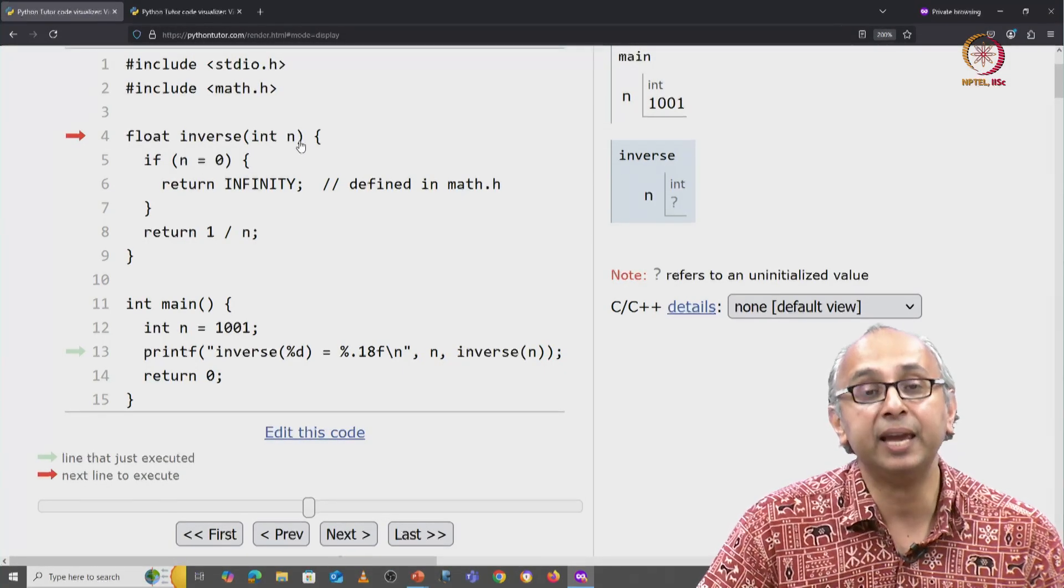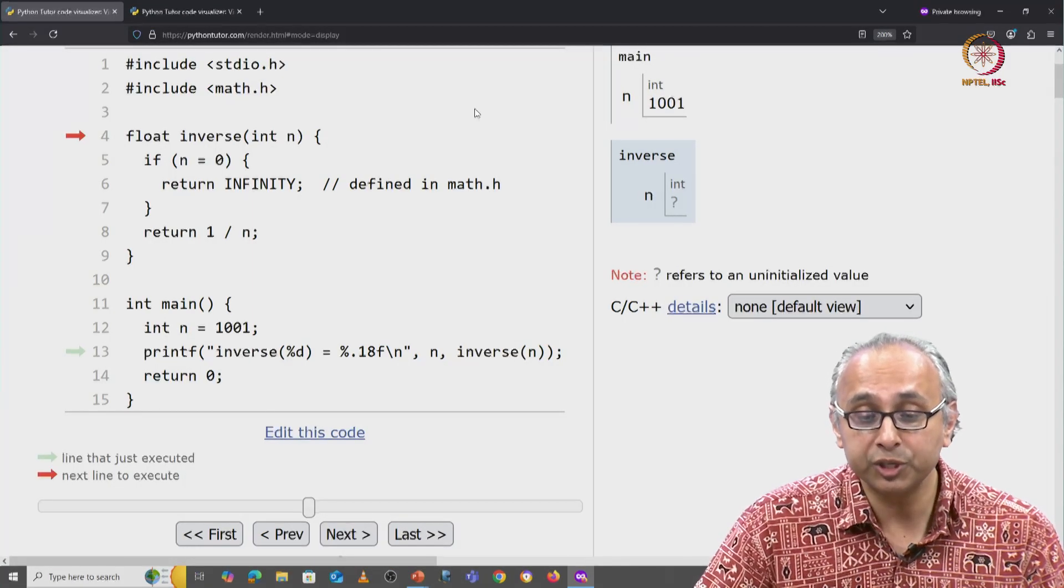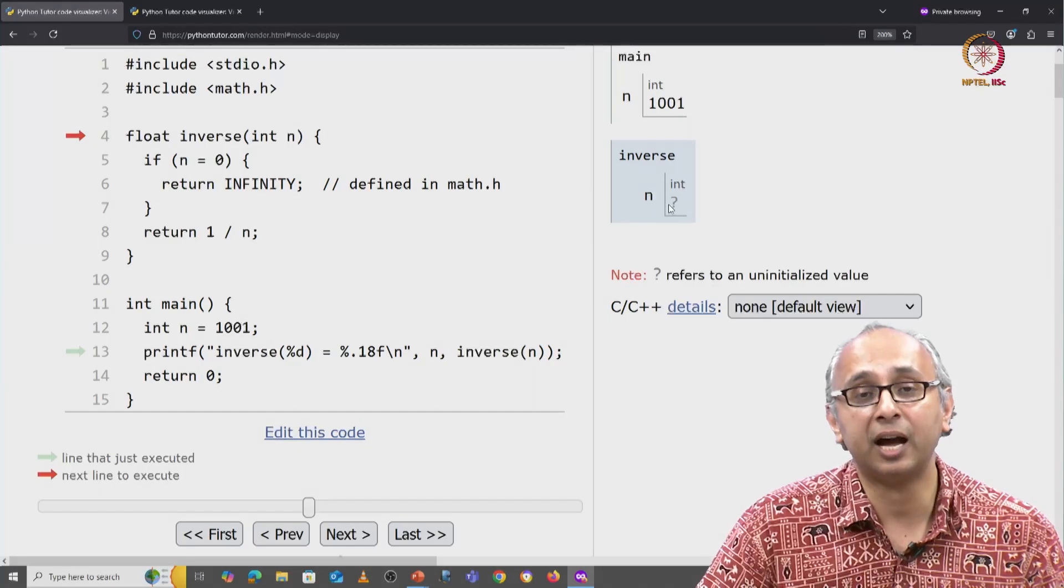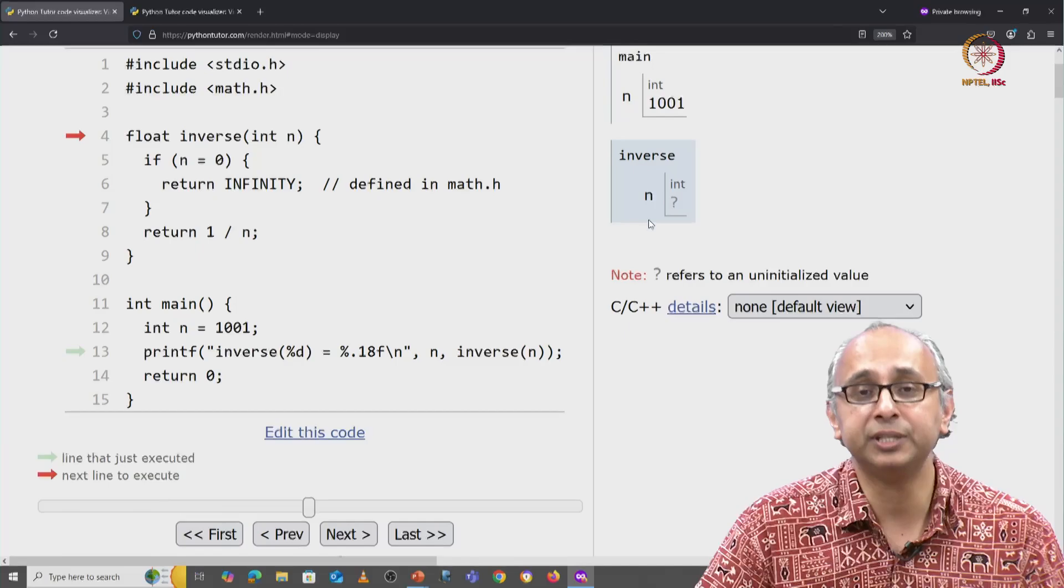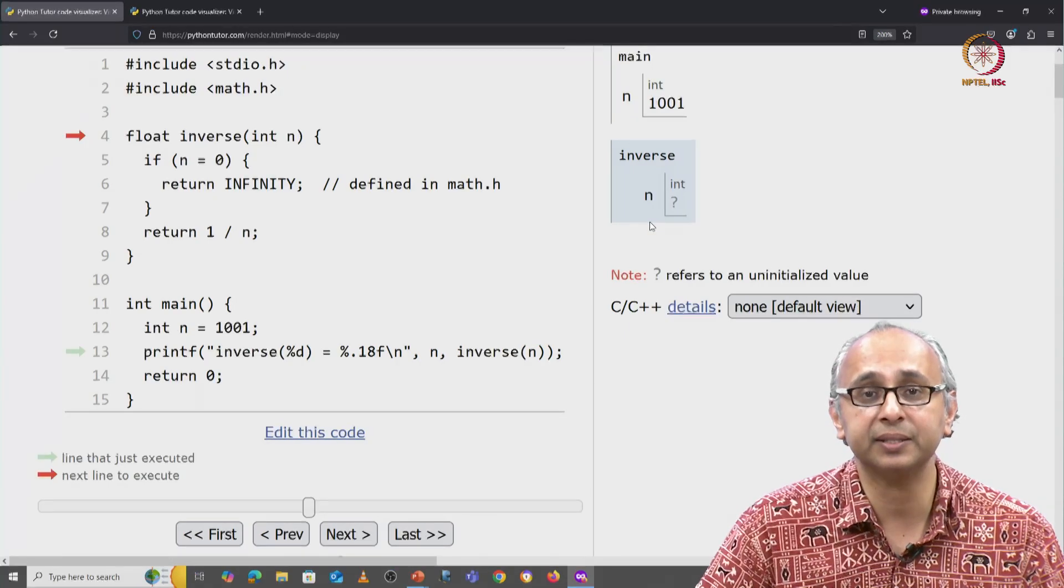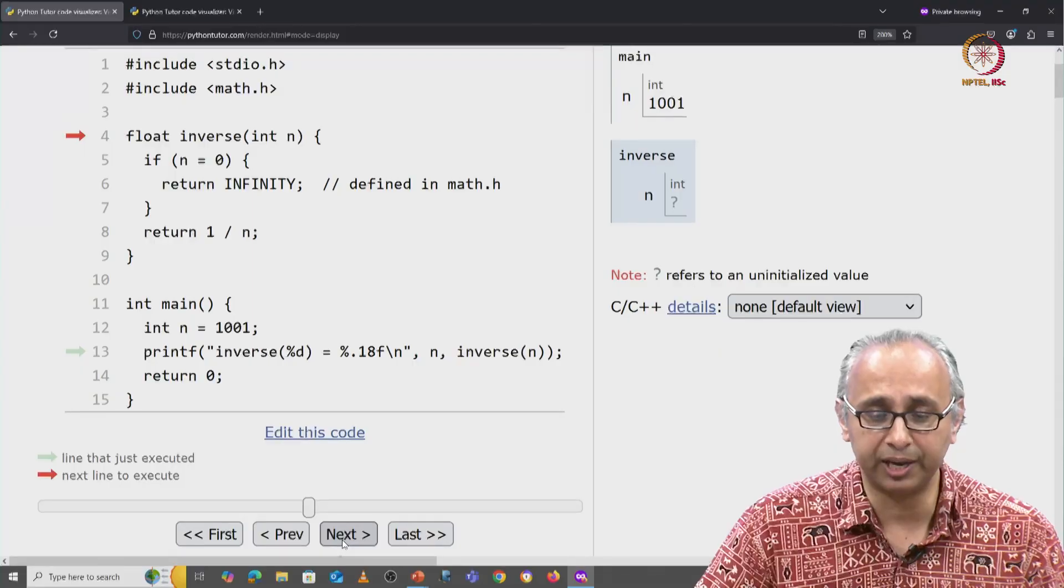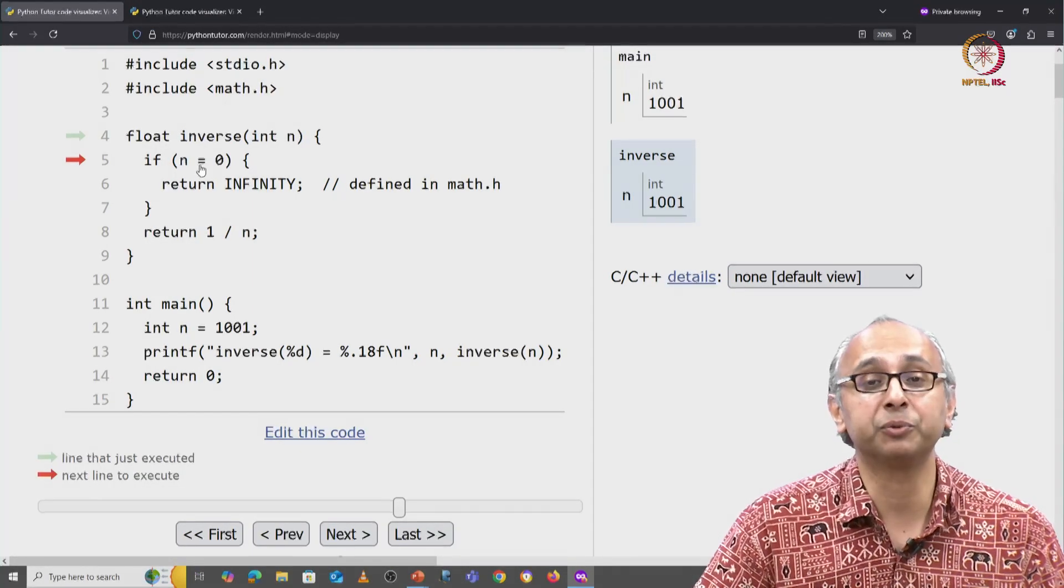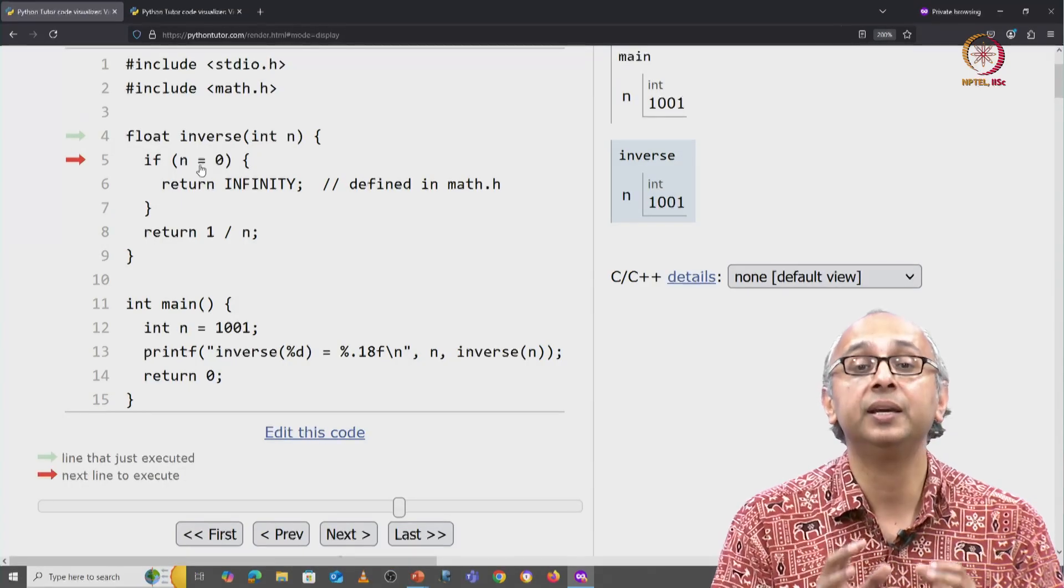There is a parameter n which is a local variable which is different from the n in main and currently that value is uninitialized. We will understand how data is passed in C in a short while. But now this parameter n is initialized with the argument 1001 and now we come to the statement. How is this statement evaluated in C?